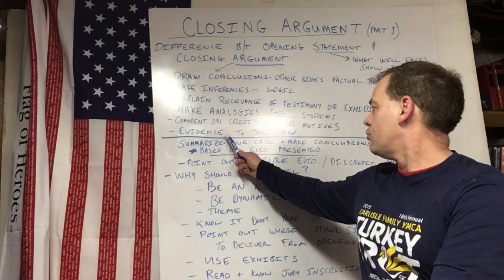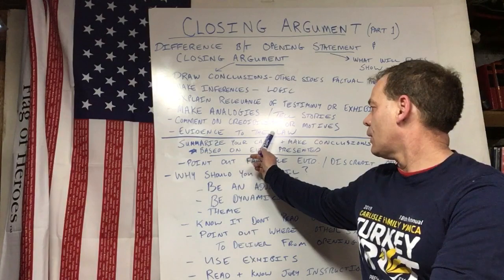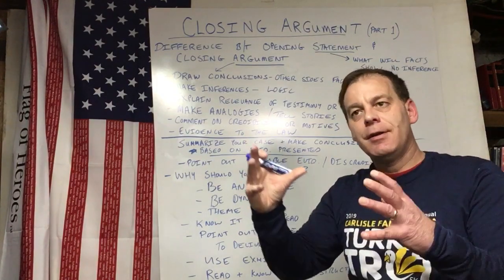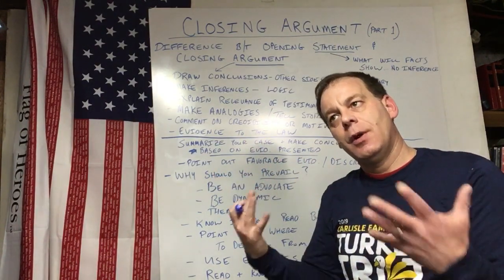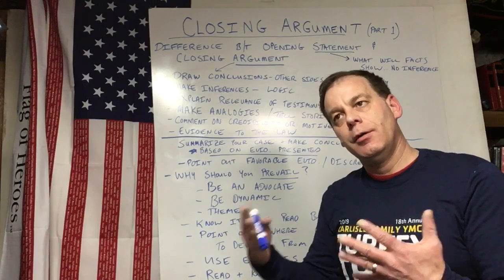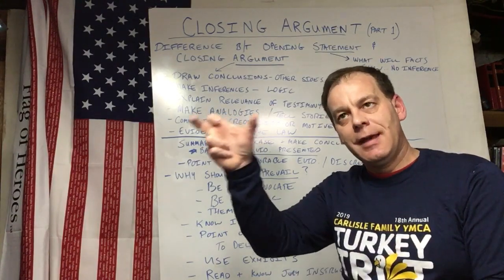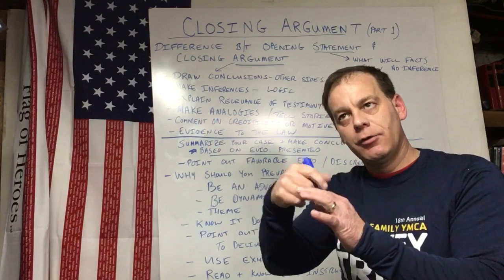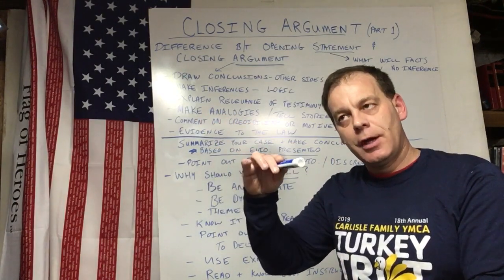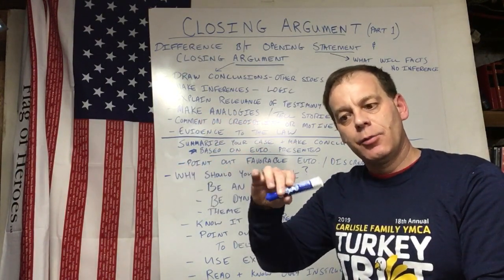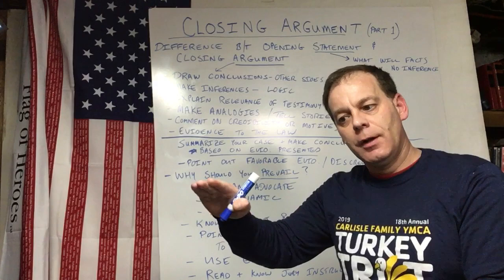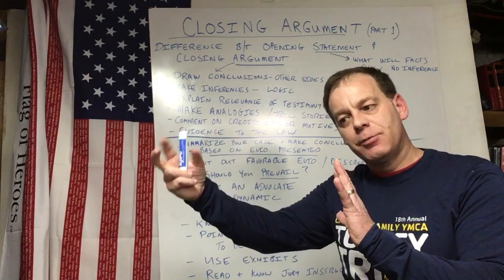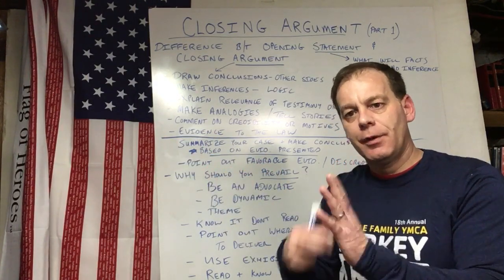The other thing is you should tie the evidence to the law. You want to take the evidence and apply it to the law. So if you have to prove drunk driving, you want to take the evidence that shows the defendant was driving — 'Here's how we prove that.' Here's how we prove they were drinking and here's what their blood alcohol level was. You want to take those facts, pull them out of testimony, and apply them to the law.